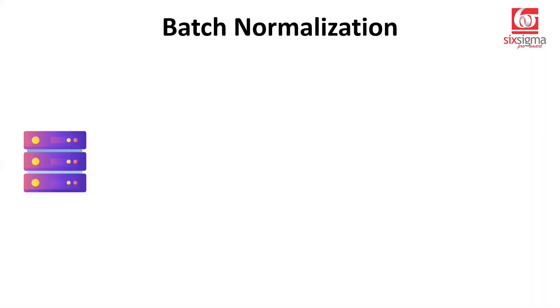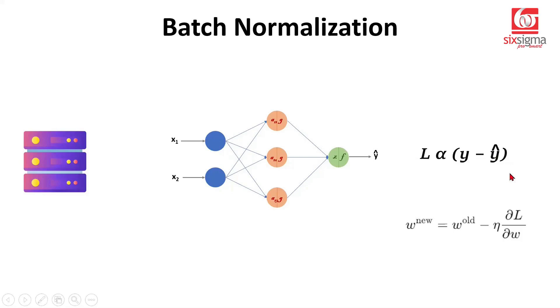So first of all, we have some data. We want to train our neural network on that data. Eventually, when we pass the data, we are generating predictions. And when we have the predictions with us, we want to calculate some loss, which will be proportional to the difference of the actual value y and the predicted value ŷ.